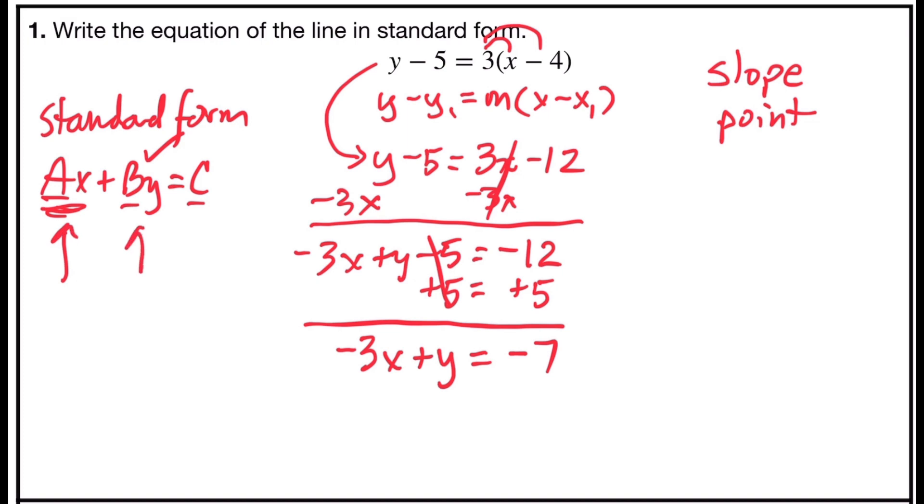I have my x term plus my y term equals number, but a has to be positive or larger than 0. So I'm either going to divide both sides by negative 1, or multiply both sides by negative 1. It's going to have the same effect. All of my signs are going to reverse. So I would get positive 3x, negative y, and positive 7. Putting my equation in standard form, I have 3x minus y equals 7.